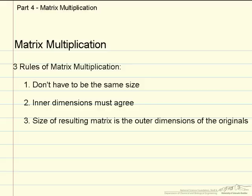There are three main rules of matrix multiplication. When you are multiplying two matrices, they do not have to be the same size. The inner dimensions of the sizes must agree, and the size of the resulting matrix is the outer dimensions of the originals.